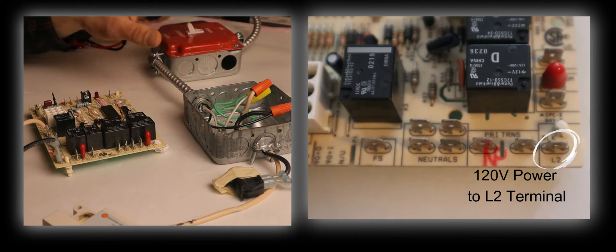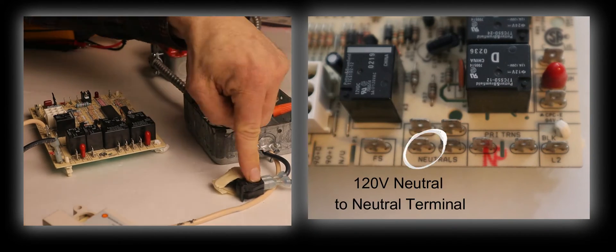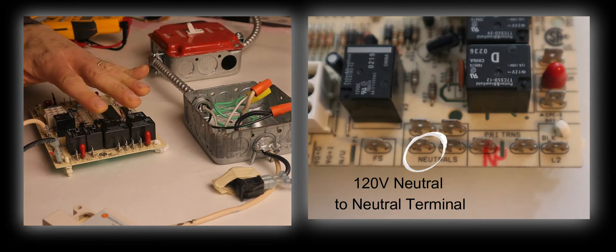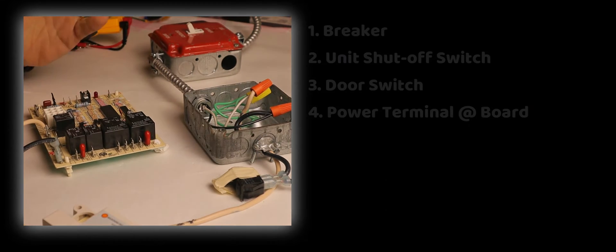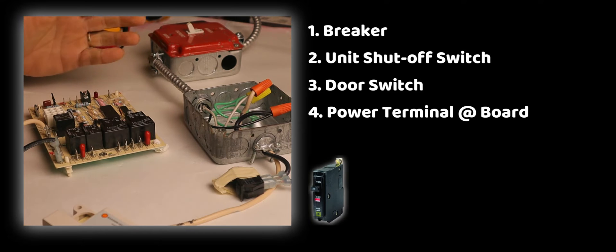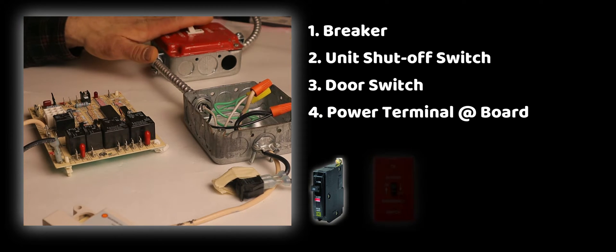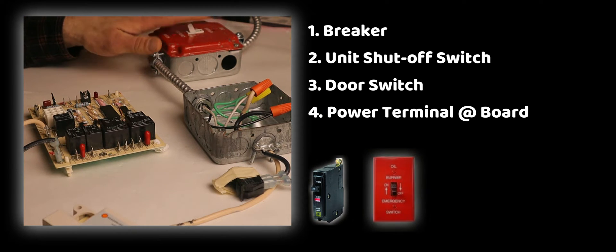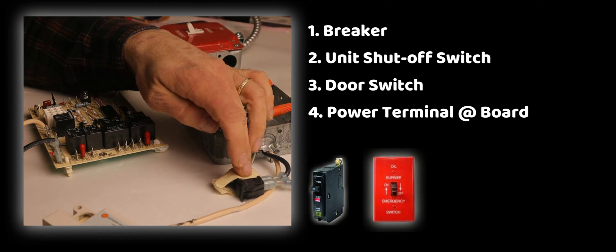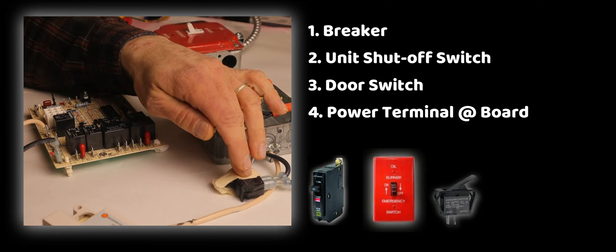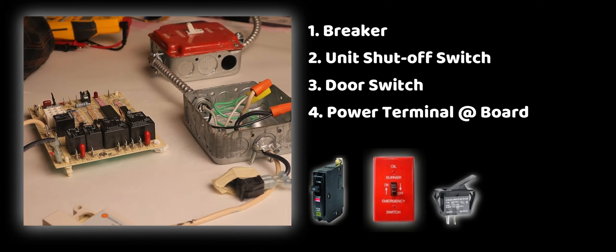Here we have a burner shutoff switch, a junction box, a door switch for a furnace, and a control board. We already have a list going now. Our first source is the breaker all the way back to the electrical panel, that's point one. Our burner shutoff switch is point number two. Power goes through there, power goes through our door switch, that's point number three, and now it comes into our control board.